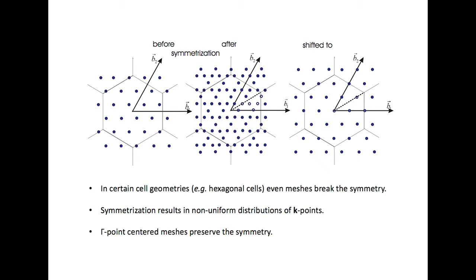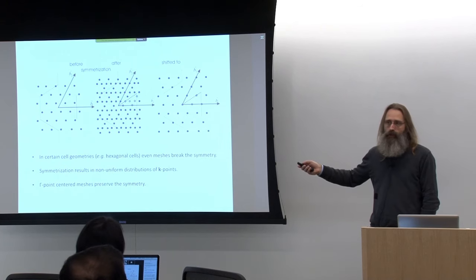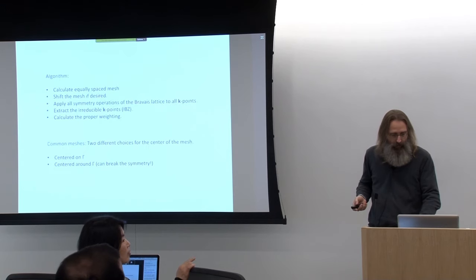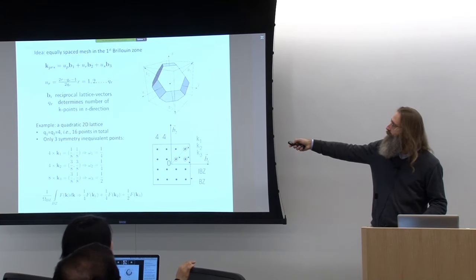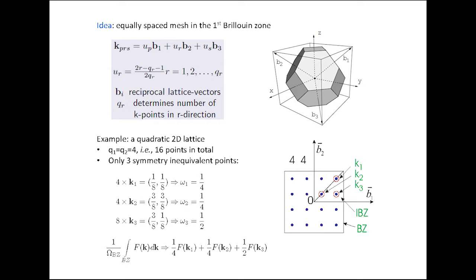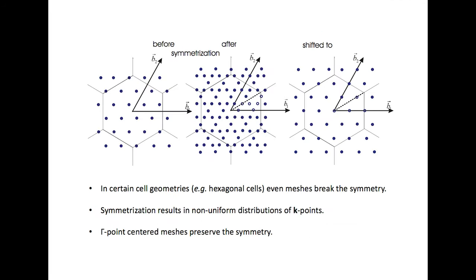The gamma point is K equals zero — the origin of the cell. Whether a K-mesh includes the gamma point or not is by choice. The standard recipe to determine the points in our grid: if all the sampling numbers are even, zero will not be part of the grid. If the sampling along one direction is an odd number of points, then the gamma point will automatically be included.